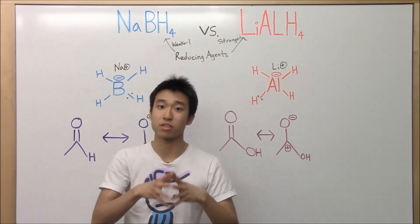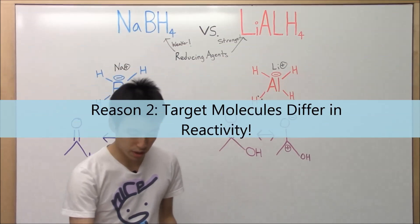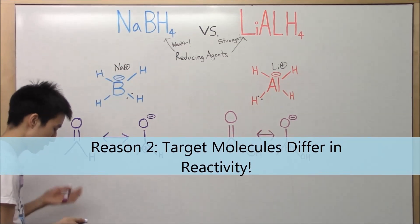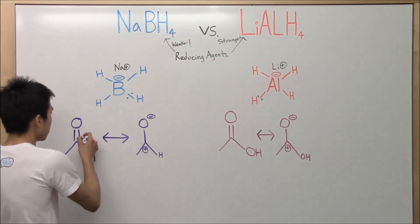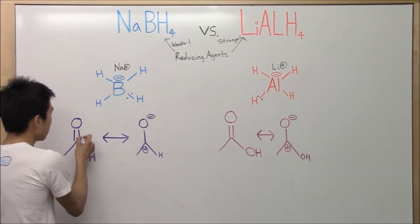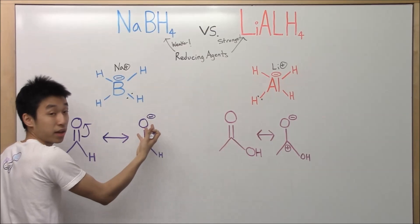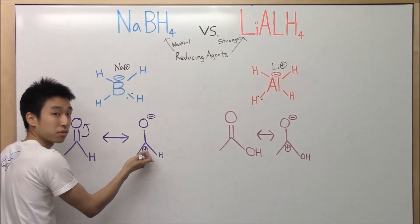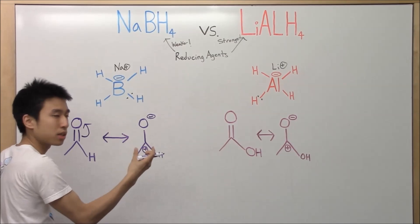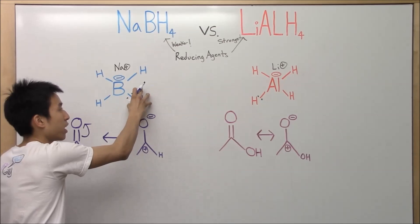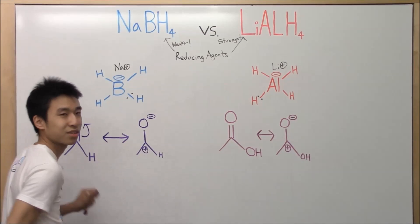For the second reason, we have to look at the targets of sodium borohydride and lithium aluminum hydride. Let's analyze the aldehyde that sodium borohydride reacts with. The aldehyde has a resonance — the double bond can resonate up, sending electrons up to the oxygen, giving it a negative charge, and depriving the carbon of electrons, giving it a positive charge. So it's really easy for the sodium borohydride hydrogen to pull off the electrons and attack.